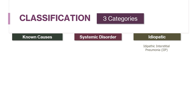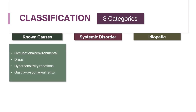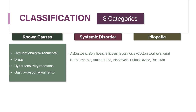The diseases in the idiopathic group are also called idiopathic interstitial pneumonia. Category 1 — known causes — includes occupational or environmental factors, certain drugs, hypersensitivity reactions, and gastroesophageal reflux disease. Occupational causes include asbestosis, berylliosis, silicosis, and byssinosis (cotton worker's lung). Drugs that can cause ILD include nitrofurantoin, amiodarone, bleomycin, sulfasalazine, and busulfan.